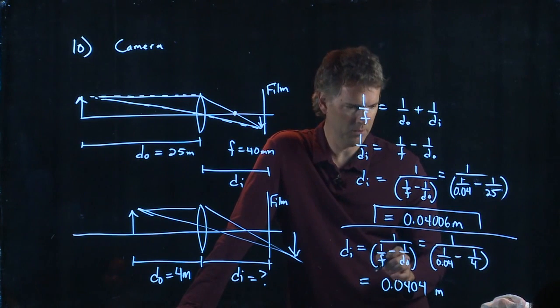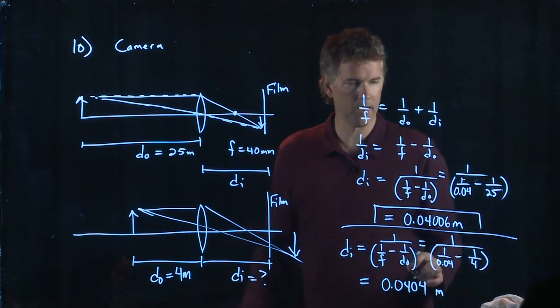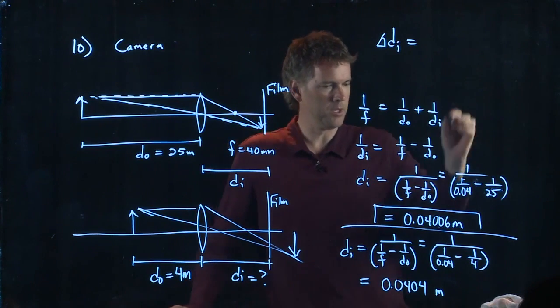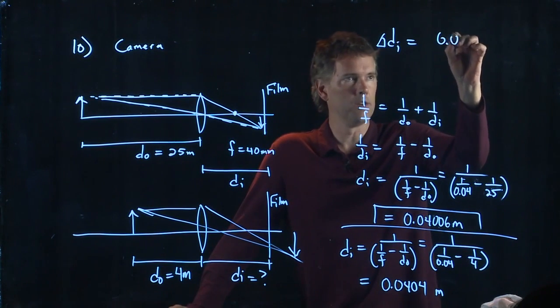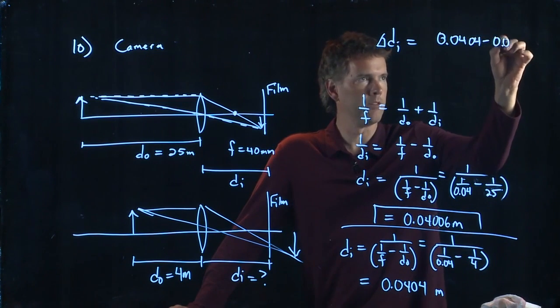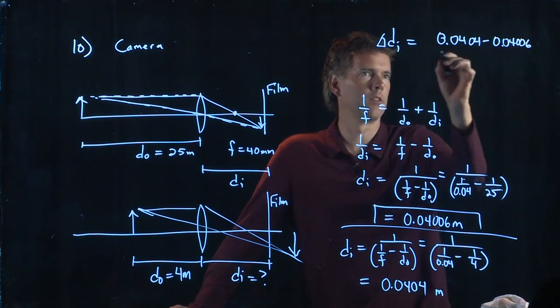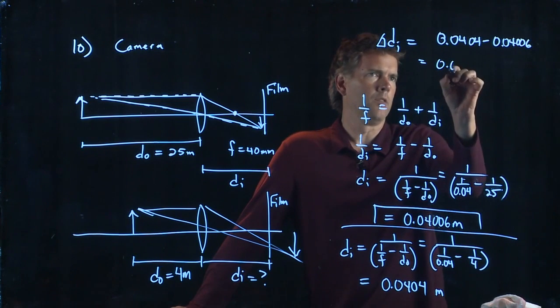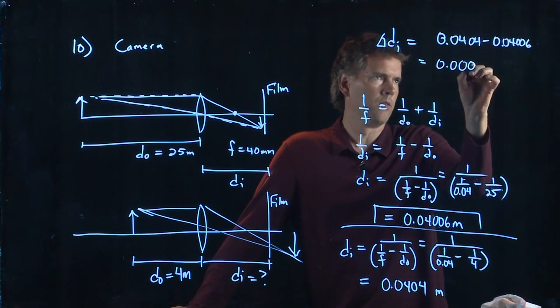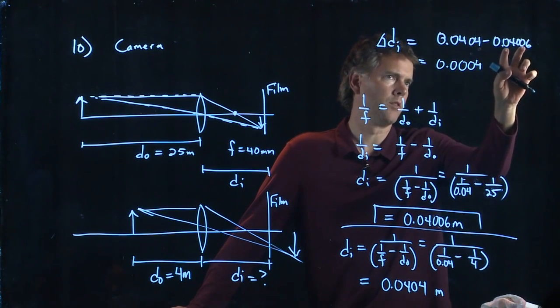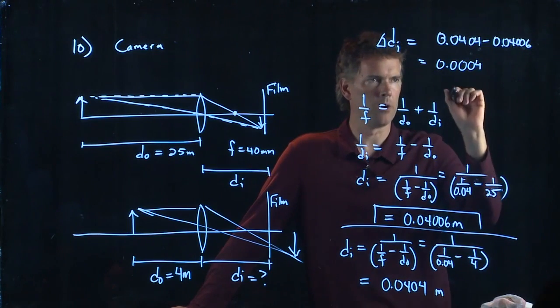So if I take the difference between those two, what do I get? Something really small, right? So delta of DI is going to be 0.0404 minus 0.04006. And if I do that, what do I get? I get 0.0004, right? That's four digits, and that's four digits. So something on that order. 0.04 meters.